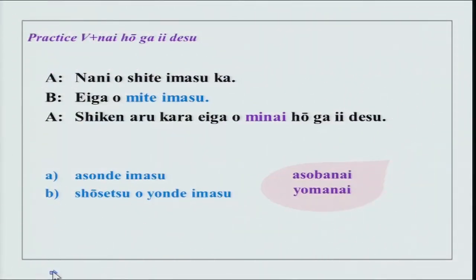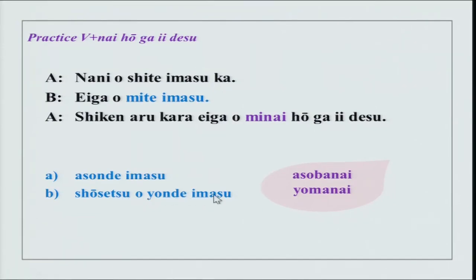Now, nai ho ga ii desu. 'Nani wo shite imasu ka?' — 'Eiga wo mite imasu' — I am watching a film. 'Shiken aru kara eiga wo minai hou ga ii desu' — it is better that you do not watch a film as you have an exam. 'Nani wo shite imasu ka?' — 'Asonde imasu.' 'Shiken aru kara asobanai hou ga ii desu.' Similarly: 'Shousetsu wo yonde imasu' — 'Shiken aru kara shousetsu wo yomanai hou ga ii desu.' You can see very clearly how it is used and practice in a similar manner.